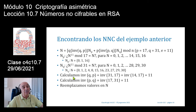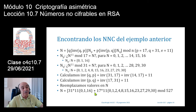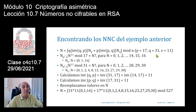Una vez que tenemos los inversos de P en Q y de Q en P, los valores de NP y NQ, los aplicamos en la ecuación: 31 multiplicado por 11 (inverso de Q en P) multiplicado por los valores NP = {0, 1, 16}, más 17 multiplicado por 11 (inverso de P en Q) multiplicado por los valores NQ = {0, 1, 2, ..., 29, 30}, todo reducido módulo N = 527.